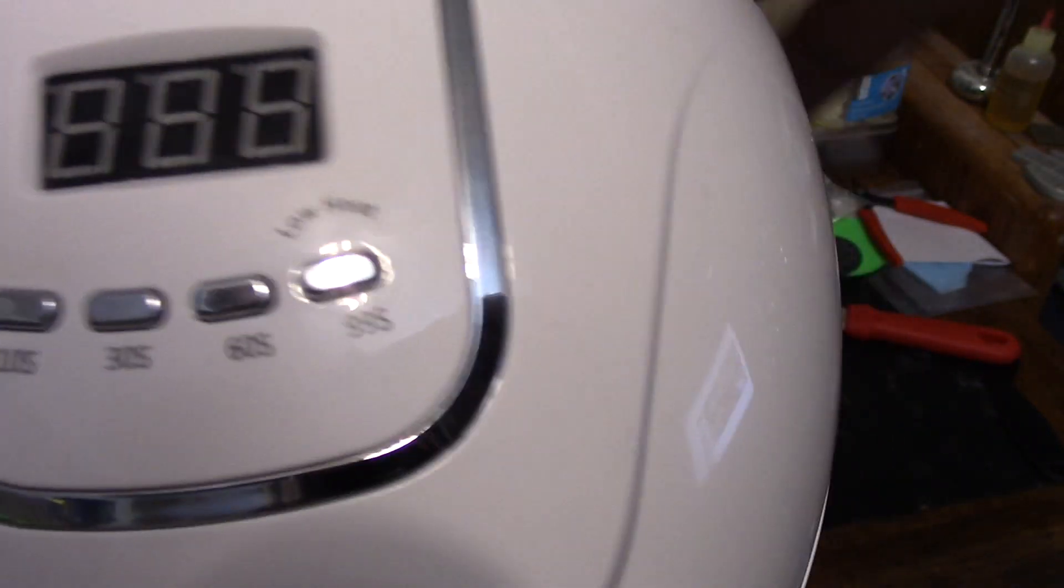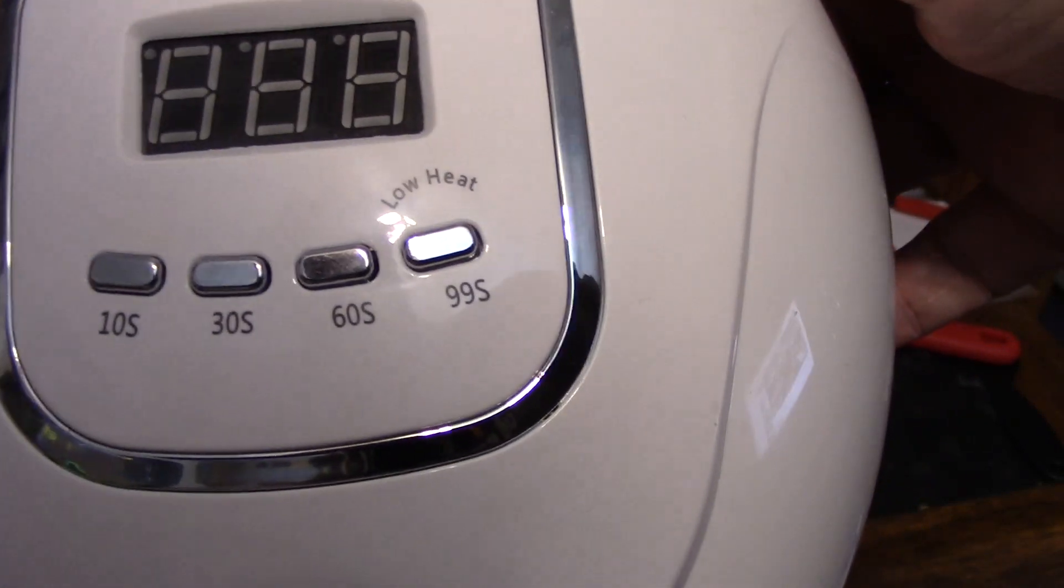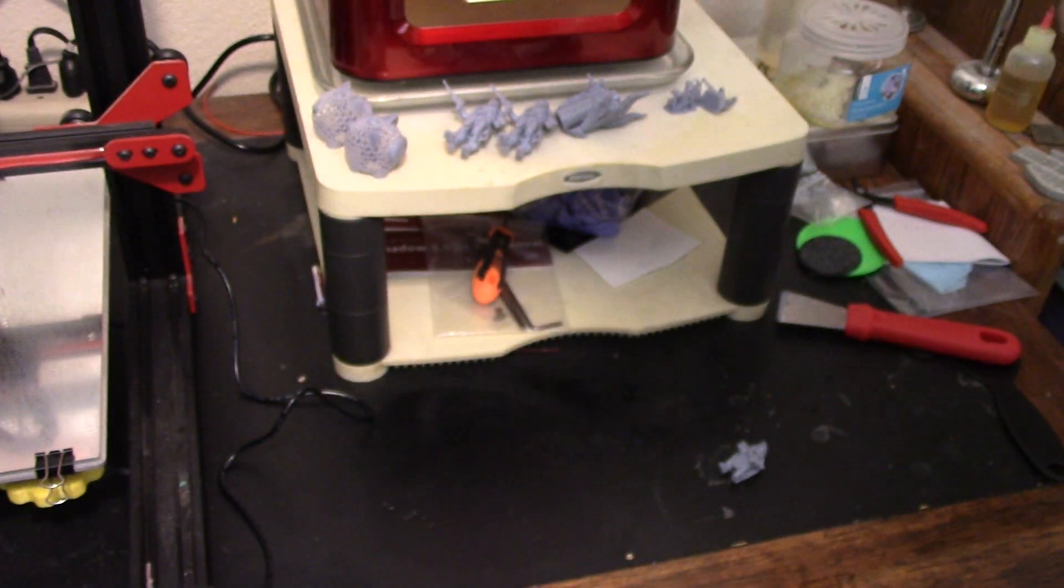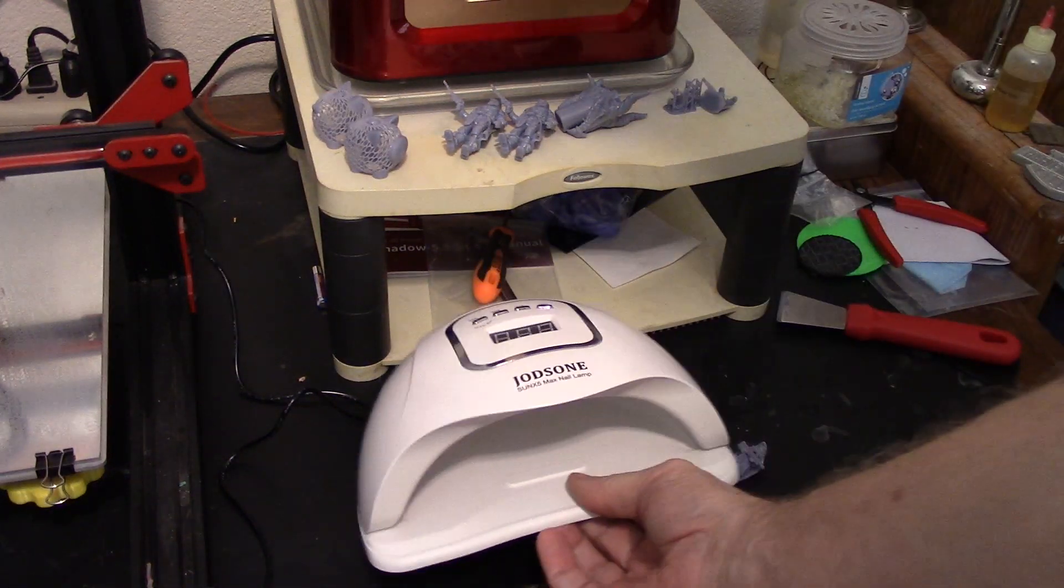It has four settings, 10 seconds, 30 seconds, 60 seconds, and 99 seconds of low heat. I guess the gel must get hot when you cure it, or there wouldn't be a low heat setting. Oh, one thing I like about this, and I bought this too, I bought everything in this, the bottom pops right off of it.